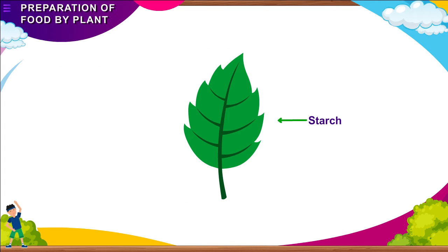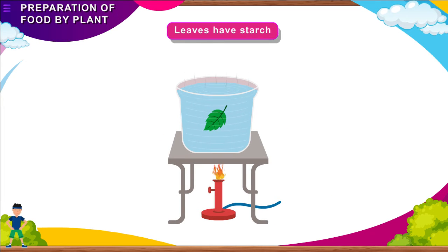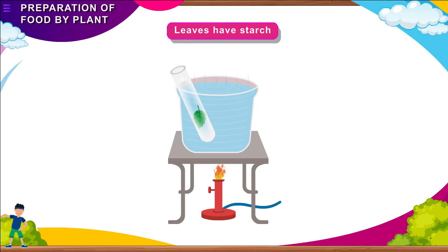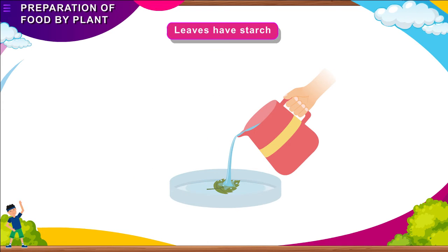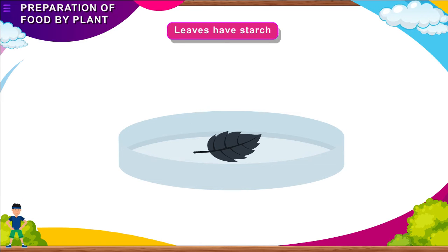Activity: Leaves have starch. Take a green leaf. Boil it in a beaker filled with water for some time. Then take the leaf in a test tube containing spirit. Boil the test tube in a beaker of hot water. Remember, spirit should not be heated directly on flame as it will catch fire. Boil the leaf till the green colour disappears. Now wash the leaf with cold water and pour some drops of iodine solution on the leaf. What do you observe? The leaf turns blue-black in colour. Starch gives blue-black colour with iodine solution. This shows that starch is present in green leaves.